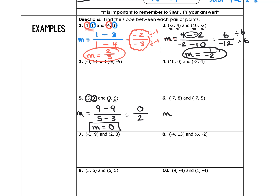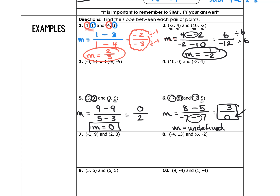Example 6: M equals 8 minus 5 over negative 7 minus negative 7. The numerator gives 3, and the denominator is negative 7 plus 7, which equals 0. So M equals 3 over 0, which is undefined. Whenever you get 0 in the bottom of a fraction, the answer is undefined — this represents a vertical line.